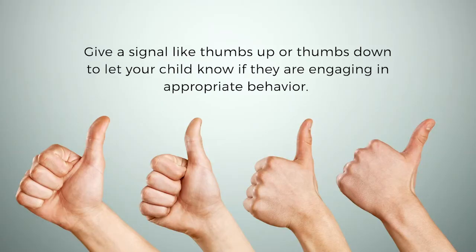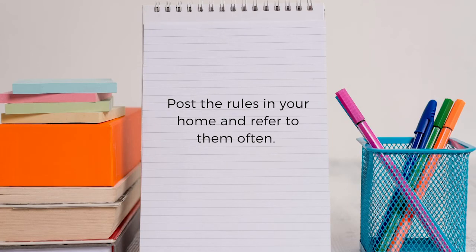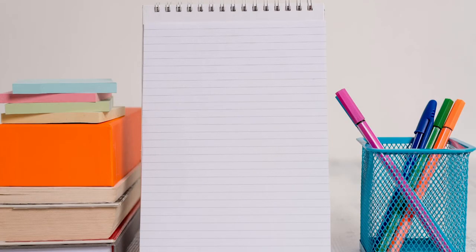Give a signal like thumbs up or thumbs down to let your child know if they are engaging in appropriate behavior. This is a great way to help your child without being too intrusive. Post the rules in your home and refer to them often. Try to keep them simple and don't have too many at a time, to ensure the child is able to understand and not become overwhelmed.